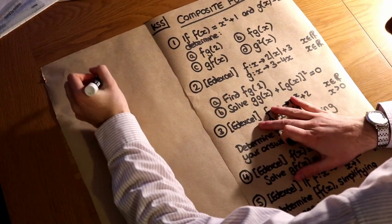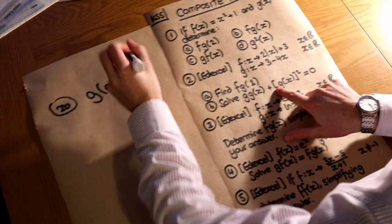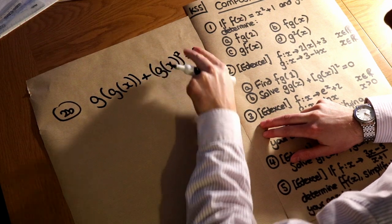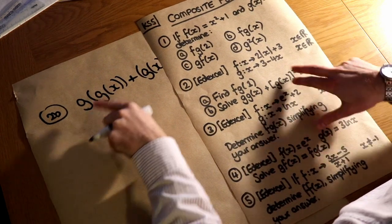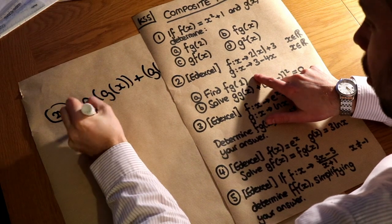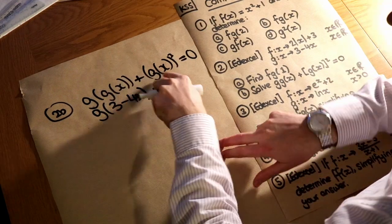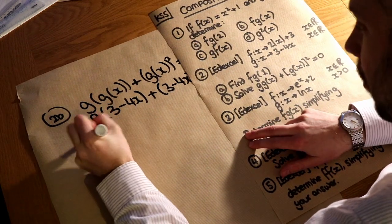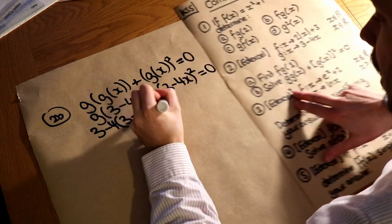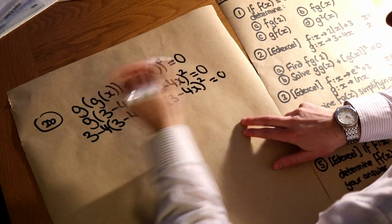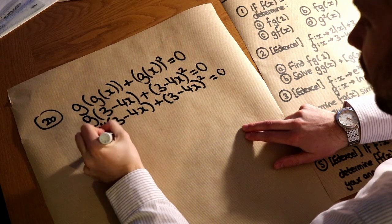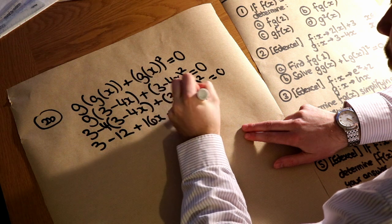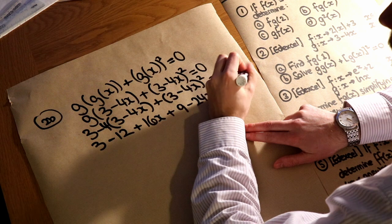For 2b, we need to solve g(g(x)) + [g(x)]² = 0. Note the difference: [g(x)]² means the function squared, while g(g(x)) means applying g twice. g(g(x)) = g(3 − 4x) = 3 − 4(3 − 4x) = 3 − 12 + 16x. Then [g(x)]² = (3 − 4x)² = 9 − 24x + 16x². Combining: 16x² + 16x − 24x + 3 − 12 + 9 = 0, collecting like terms gives 16x² − 8x + 0 = 0.